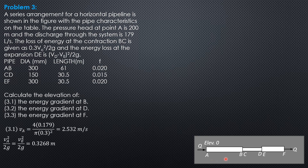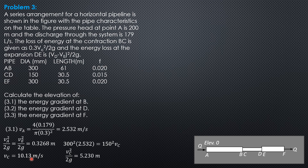By the continuity equation, to solve for velocity at C or D: diameter at B squared times velocity at B equals diameter at C squared times velocity at C — there is no need to include pi over 4 as it cancels. So 300 squared times 2.532 equals 150 squared times velocity at C, giving velocity at C of 10.13 meters per second. The velocity head at C is 10.13 squared divided by 19.62, which equals 5.232 meters.